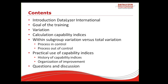Here is what we want to do in the next one and a half hours. First, a very brief introduction of who we are. Then we discuss the goals of the training. When we talk about process capability, we talk about variation, so I'll explain how variation is calculated in capability indices. I'll explain how these indices are calculated, and we can calculate variation in different ways — within subgroup variation versus total variation. Then we discuss process capability for processes in control and out of control. Finally, I'll give some ideas about practical use of capability indices in day-to-day business, followed by open Q&A.